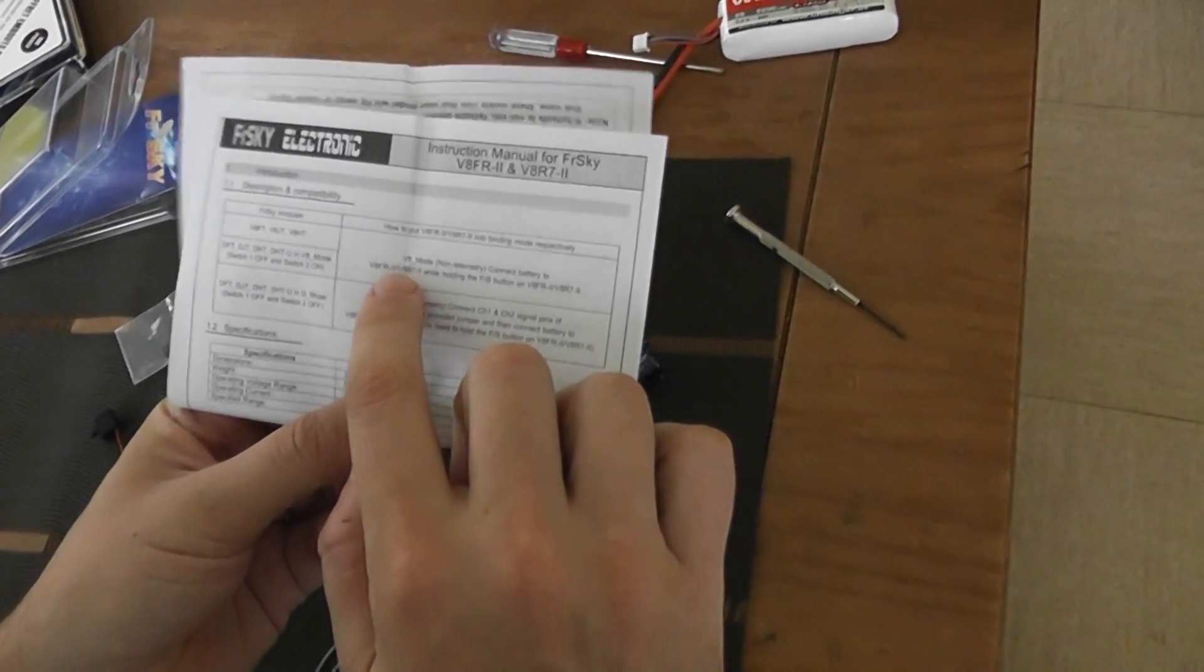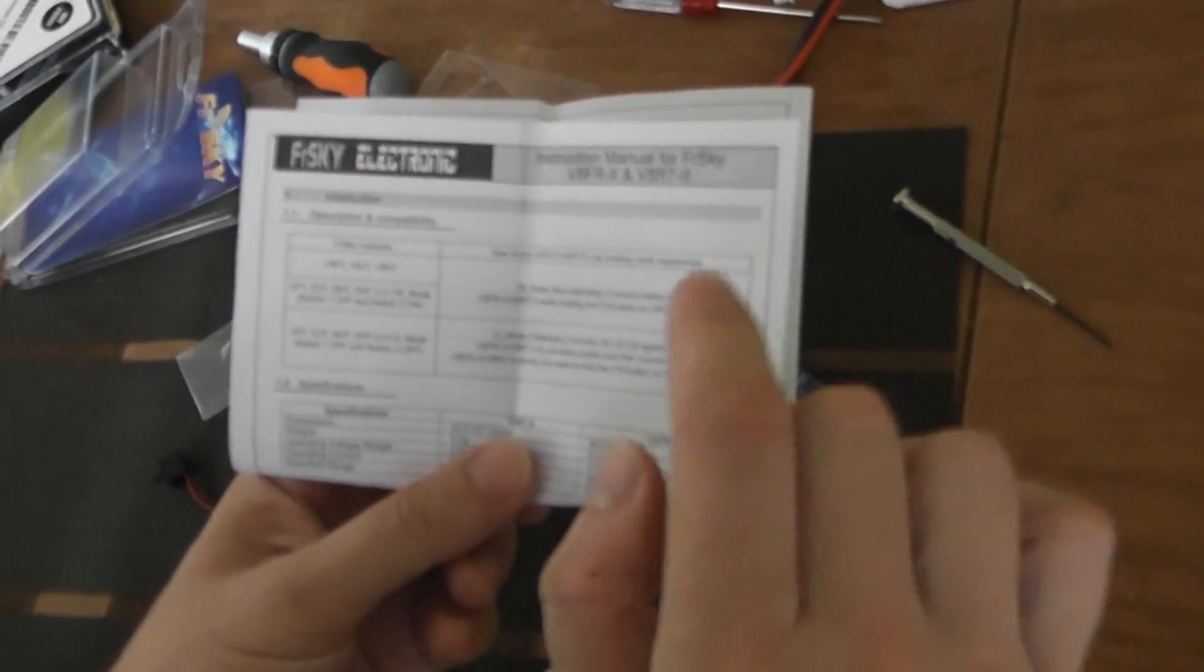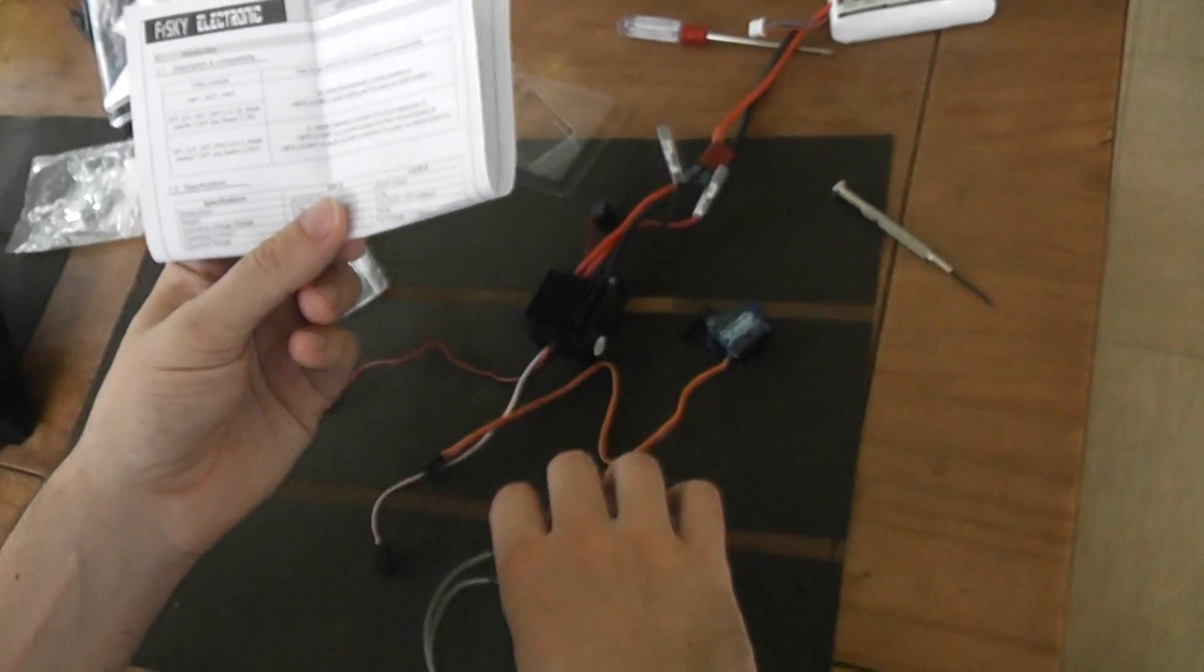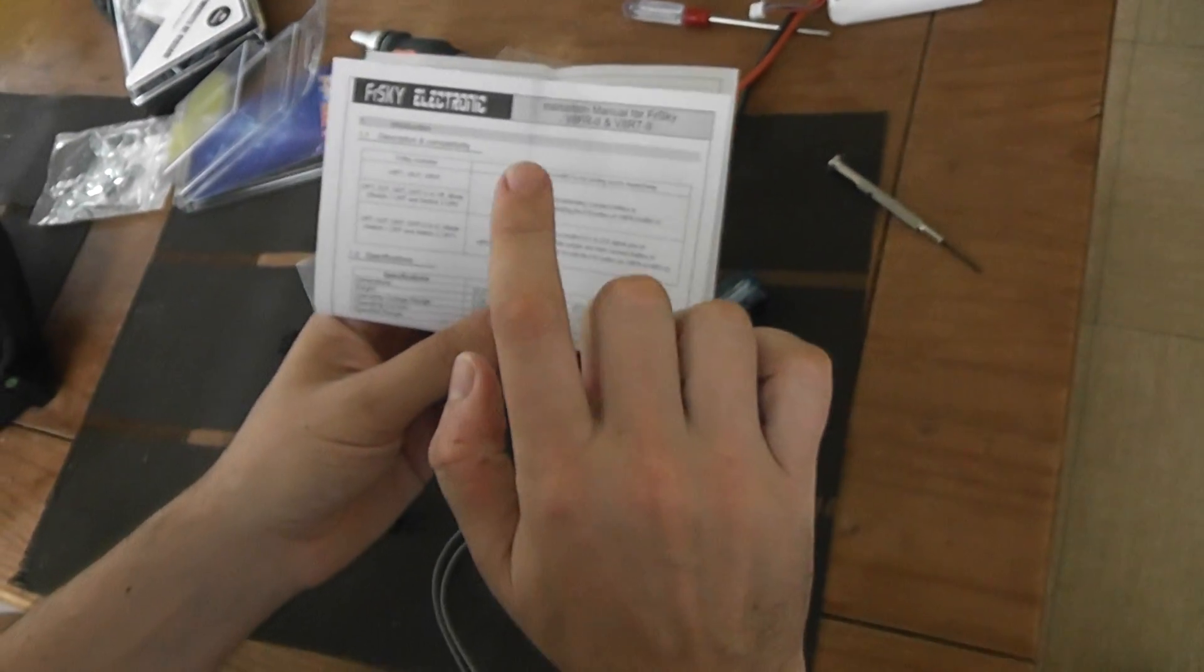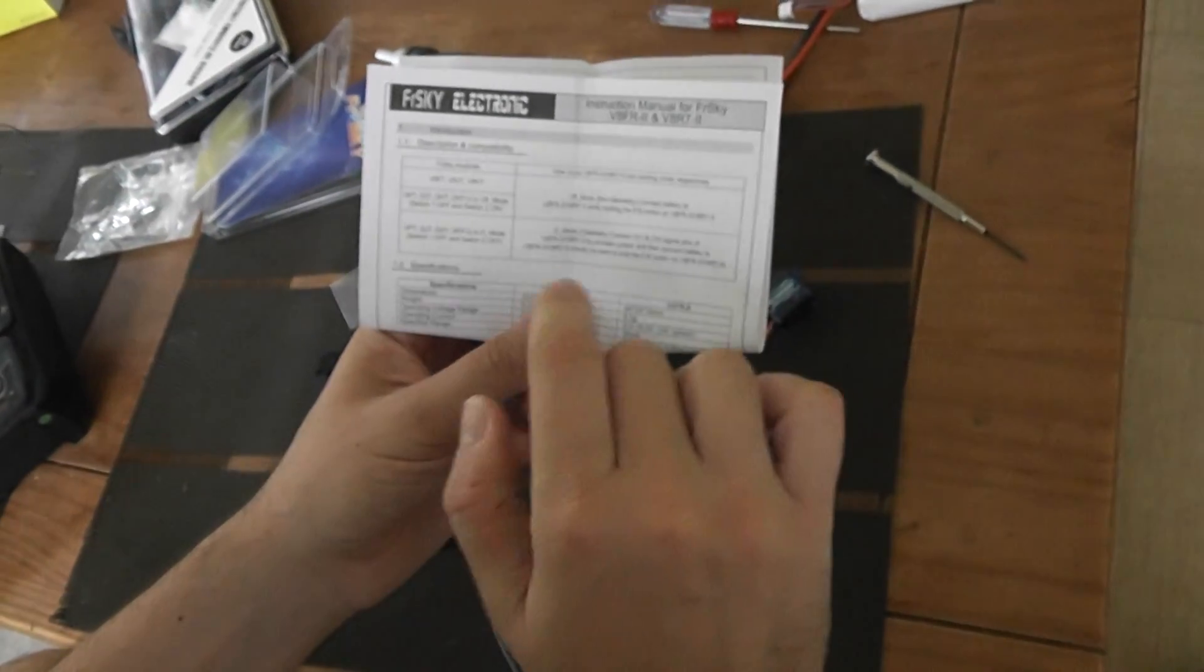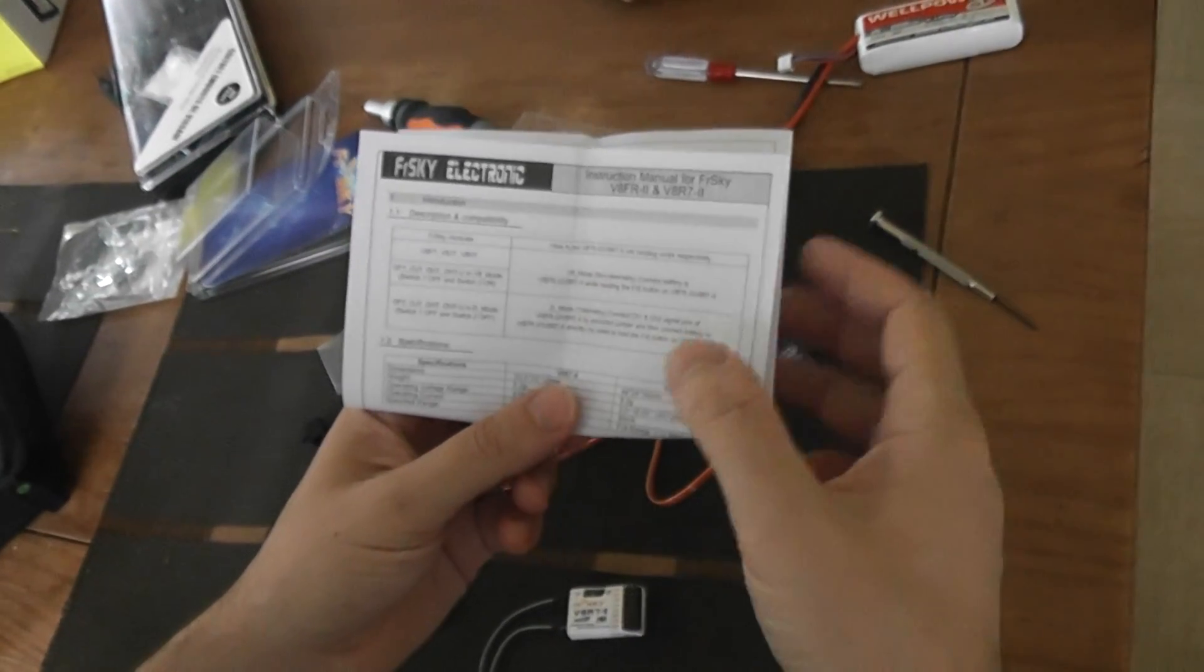One using DeviationTX 8 mode with non-telemetry information. Even if this receiver can send some telemetry information, you can bind either in full non-telemetry method or faking in D mode some telemetry protocol.